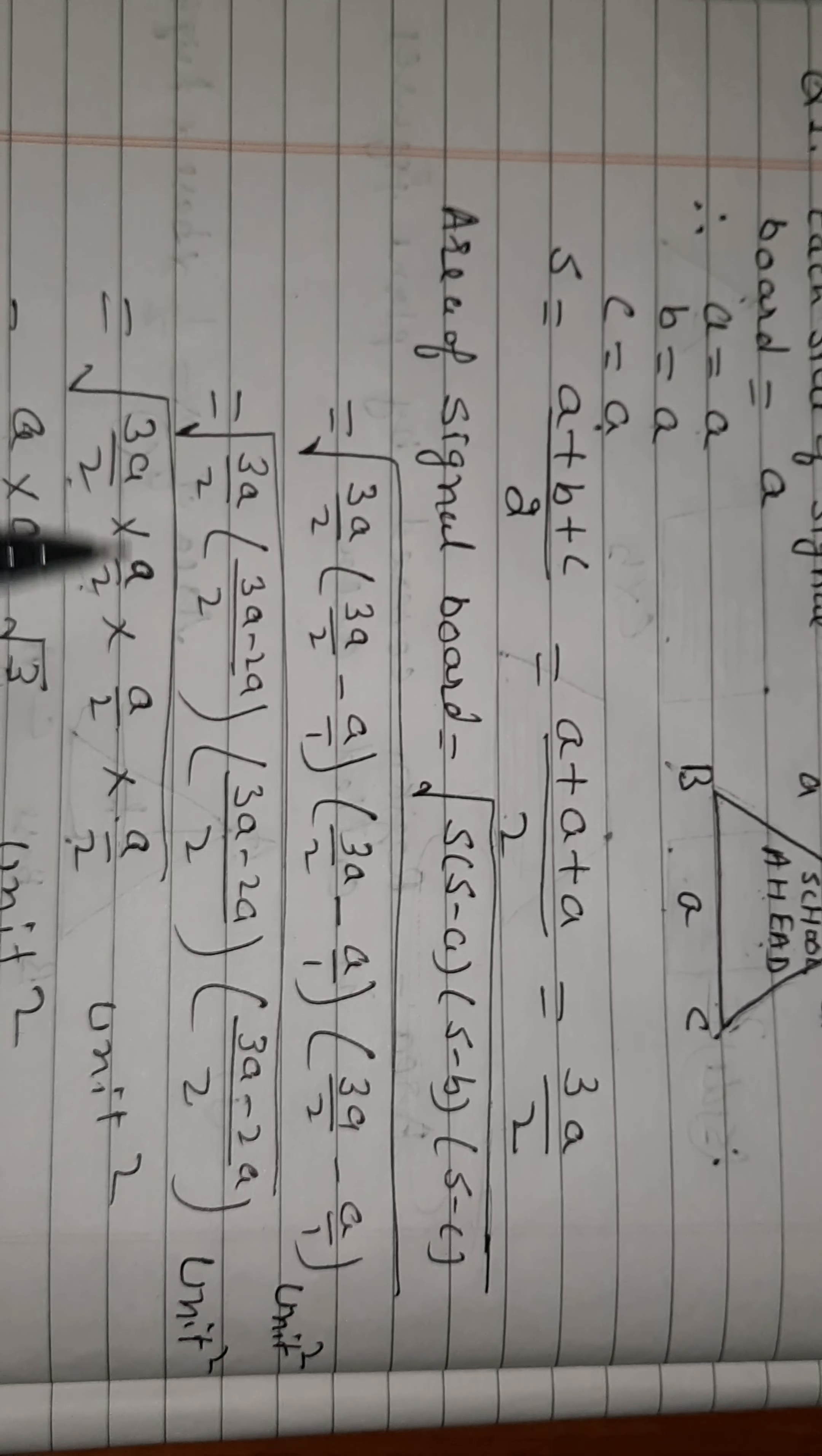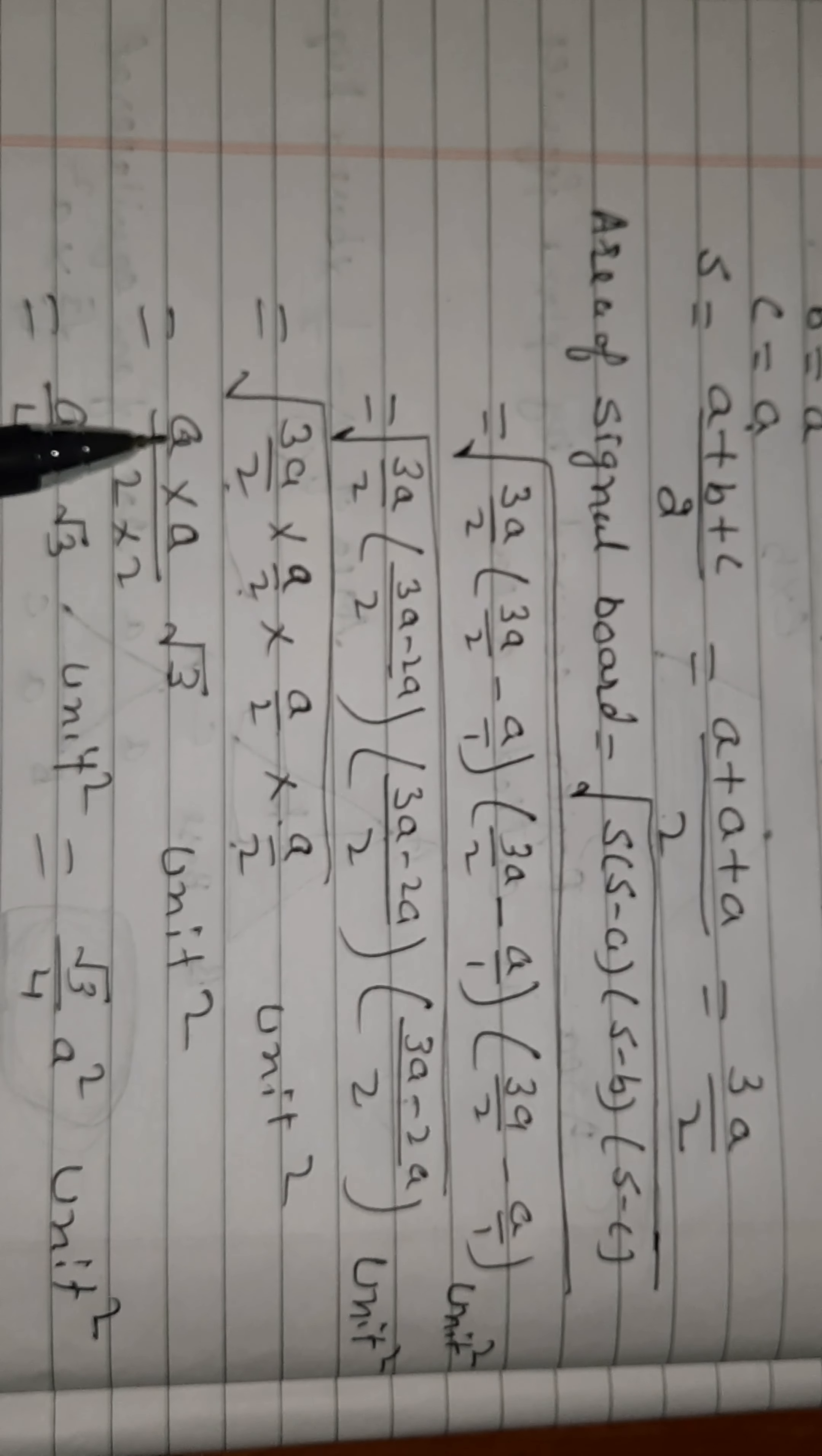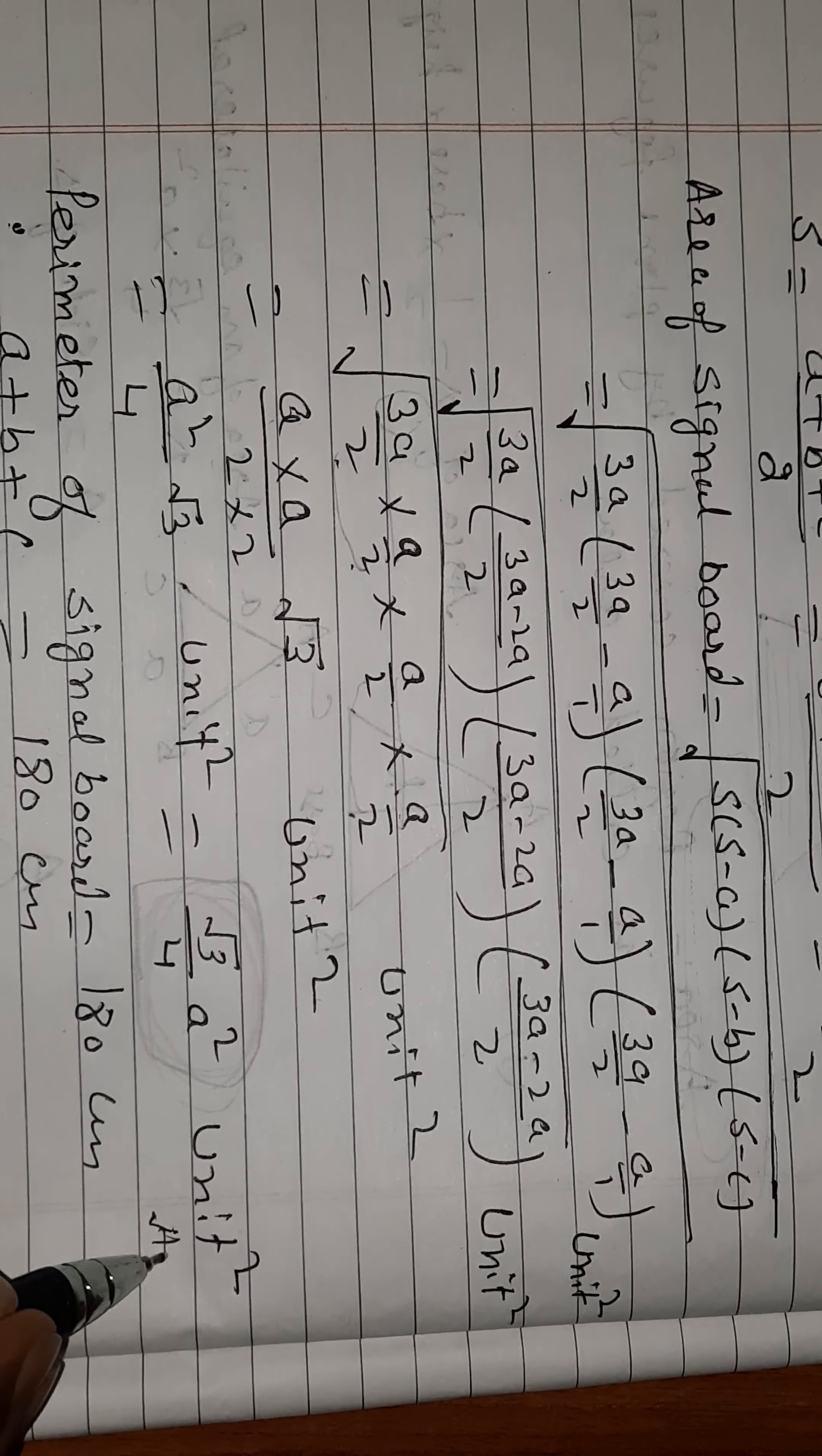Now √[(3a/2)(a/2)(a/2)(a/2)] = √[(3a × a × a × a)/(2 × 2 × 2 × 2)] = √(3a⁴/16). This can be written as a² × √3/4, which equals (√3/4)a². This is the area of the signal board.